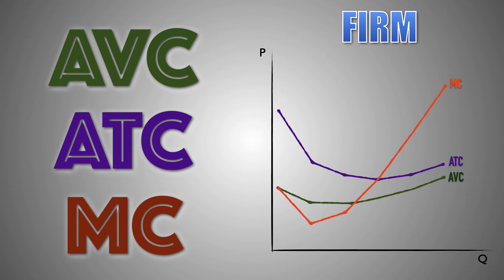Because perfectly competitive firms are relatively small in size, they generally face similar costs. While there might be some slight variation in the rate in which they rise or fall, the per-unit production costs of every firm are very similar. This means that the per-unit cost curves for one firm look relatively the same as the per-unit cost curves for any other firm in the industry.